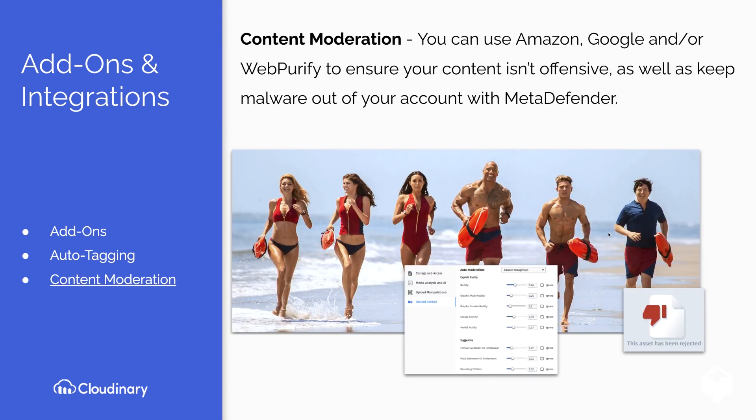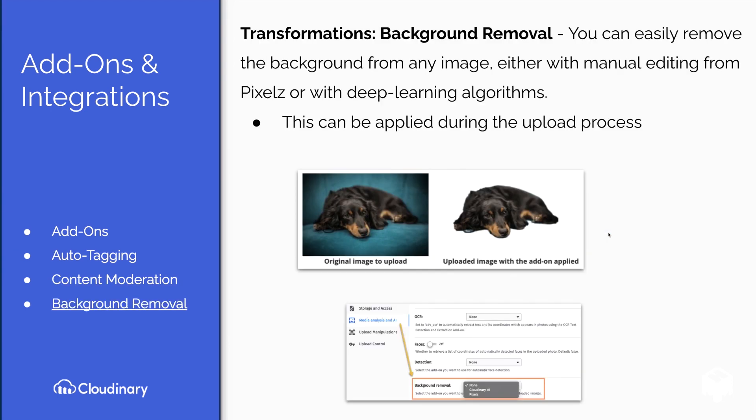Another great add-on is content moderation, which is great for user-generated content. You can use Amazon, Google, or Web Purify to ensure your content isn't offensive, and keep malware out of your account with MetaDefender. Then there's background removal — you can easily remove the background from any image, either with manual editing from a service like Pixelz or with deep learning algorithms, and this can be applied during the upload process.